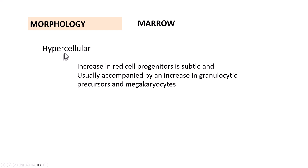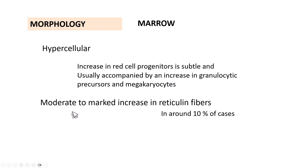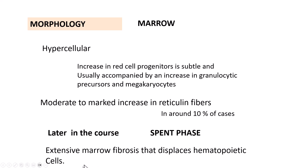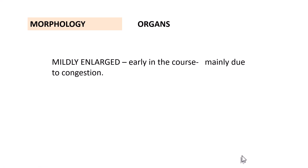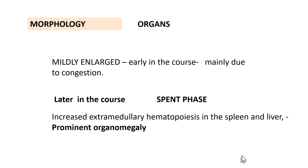In the bone marrow, the marrow is hypercellular because polycythemia vera is panmyelosis — there is increase in red cell progenitors accompanied by increase in granulocytic cells as well as megakaryocytes. There is also a moderate to marked increase in reticulin fibers in around 10% of cases. Later in the course of the disease — the spent phase — marrow fibrosis becomes very extensive and displaces the hematopoietic cells. Organs are also enlarged: initially due to congestion, and later due to increased extramedullary hematopoiesis, presenting as prominent organomegaly.